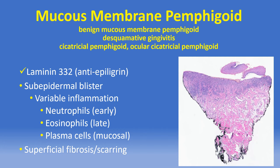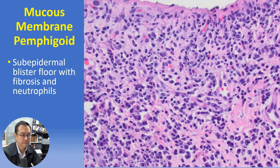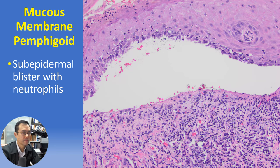Mucous membrane pemphigoid is a scarring or cicatricial form of pemphigoid that may affect multiple mucosal surfaces including the conjunctiva, showing a subepidermal blister with variable inflammation. Superficial fibrosis or scarring is characteristic, with parallel east-west collagen and vertically oriented north-south blood vessels amidst an inflammatory host response with neutrophils and plasma cells. Other areas show the epithelial blister roof with a mixed inflammatory infiltrate including neutrophilic spongiosis.